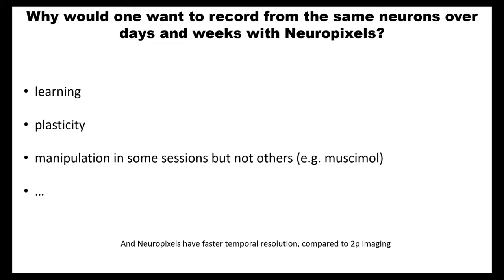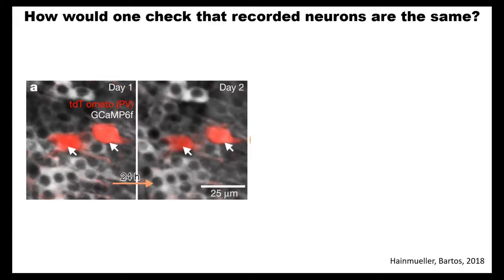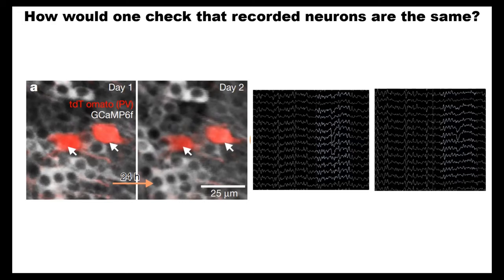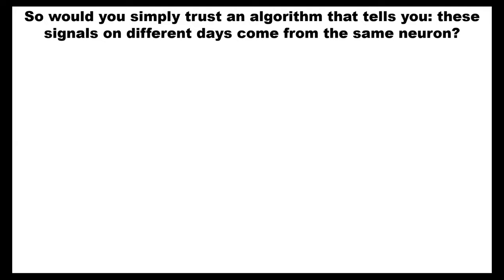So this is the motivation — why you may want to do this. How would you actually check that you are recording from the same neurons? With 2-photon imaging you can just look at your images and see that they look very similar over days, so you are sure you are tracking the same neurons. With Neuropixels, on the other hand, you get waveform traces, and day one and day two traces might look similar, but you're not really sure if they come from the same neuron. Would you trust an algorithm that just tells you these traces are from the same neuron? I would want to first check this algorithm on some ground truth data. And then I can use it on other data where I might not have ground truth, but if the algorithm is working fine, then I'll trust the results.